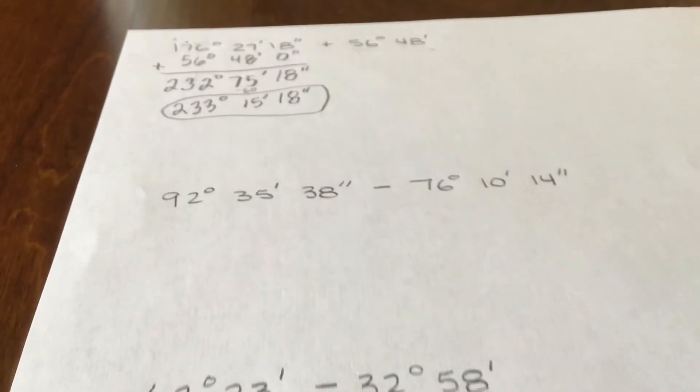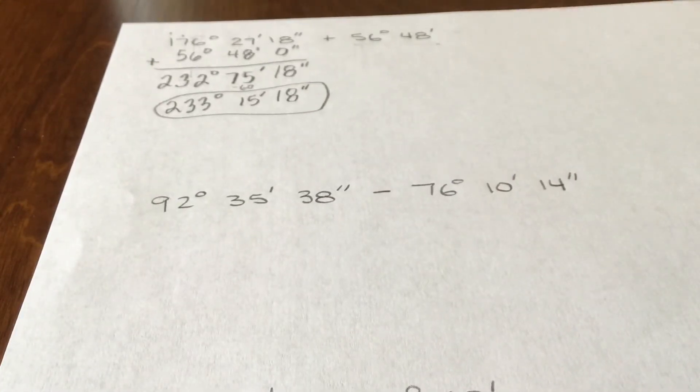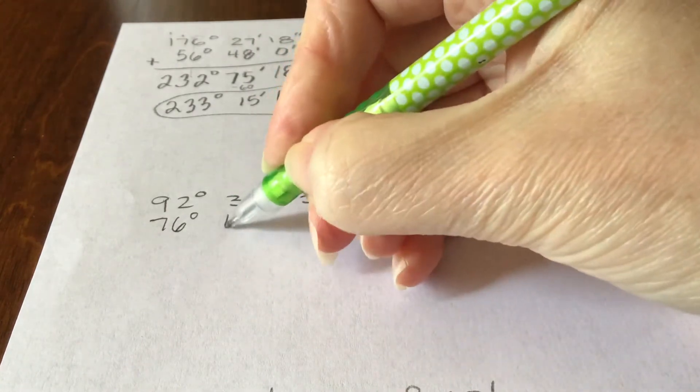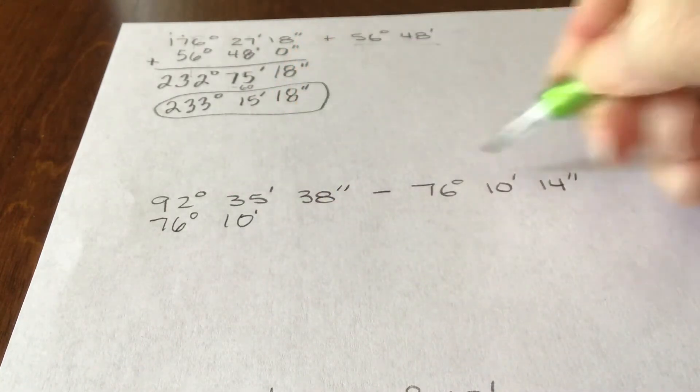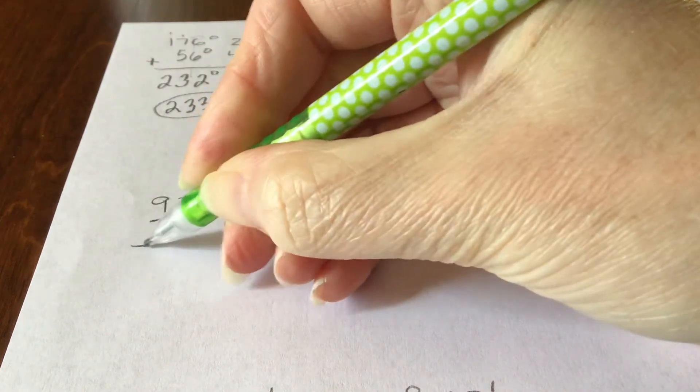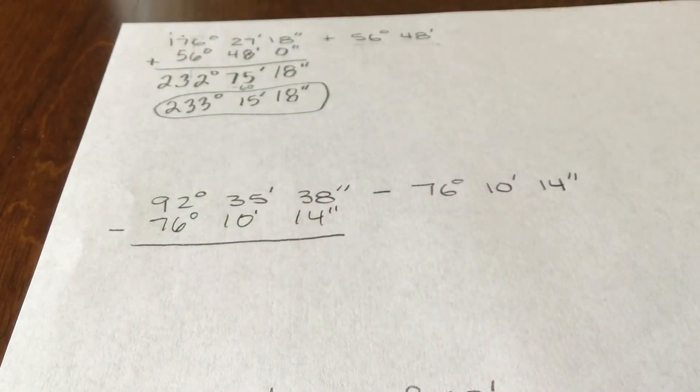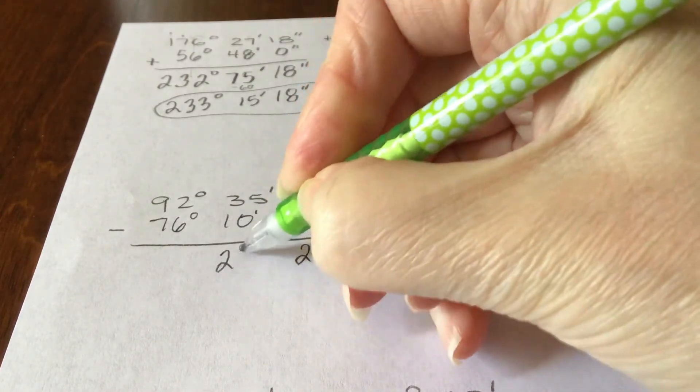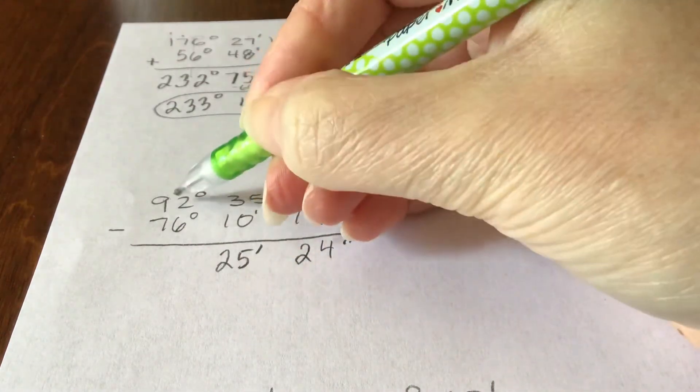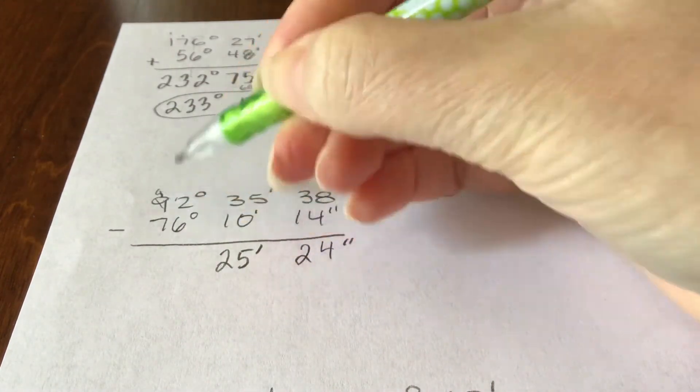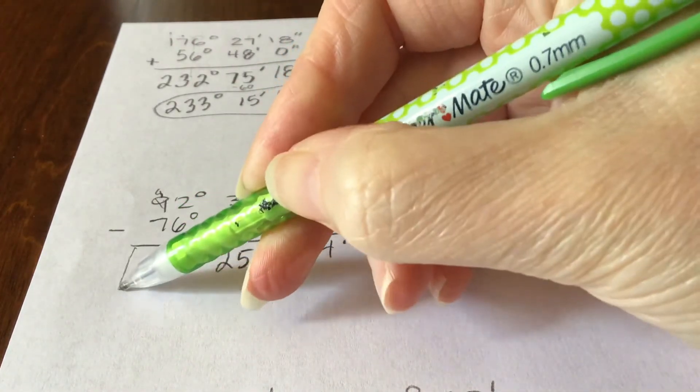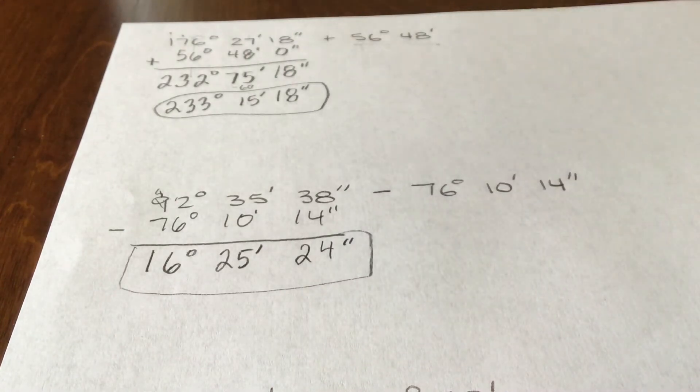Subtraction can be interesting, okay? This first example that we're going to do with subtraction is very straightforward. You line it up underneath. 76 degrees, 10 minutes, and 14 seconds. You subtract each of the individual parts. And there's no regrouping to do. So this is your final answer.